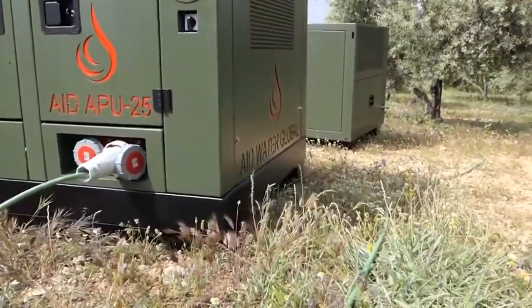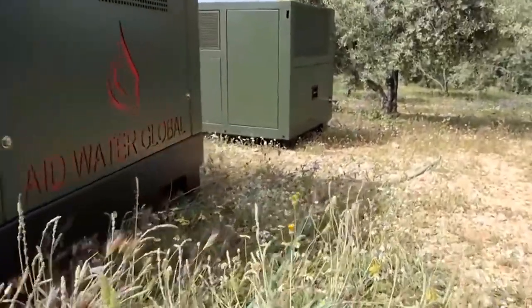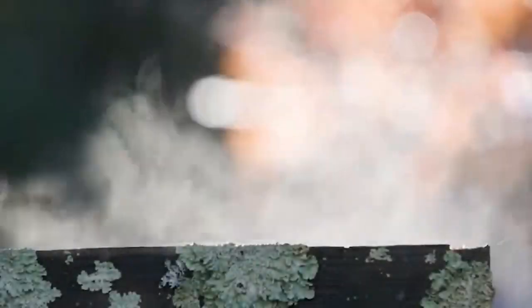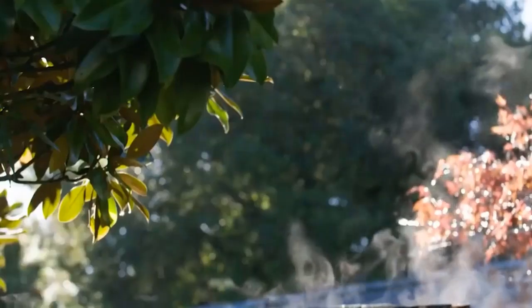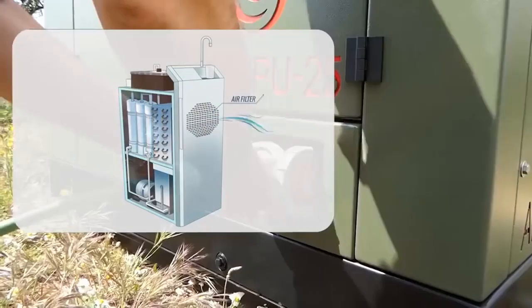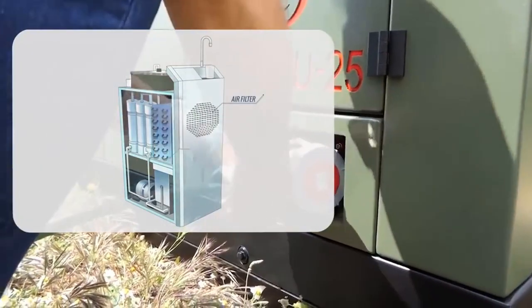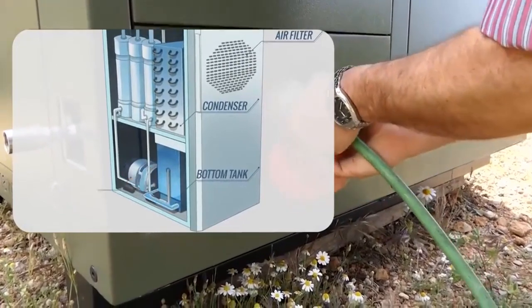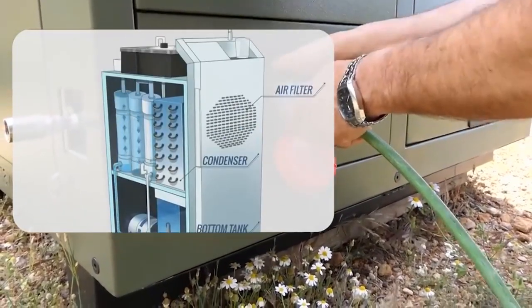The use of solar energy in AWGs offers several advantages. Firstly, it significantly reduces operational costs by minimizing reliance on large amounts of electricity. Solar heat accounts for over 90% of the energy used in the A2WH system, making it highly efficient and environmentally friendly.